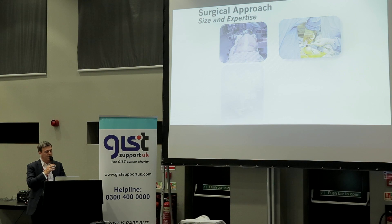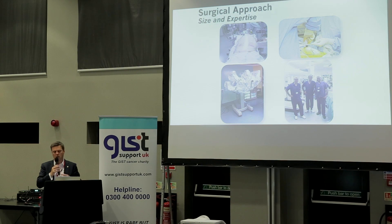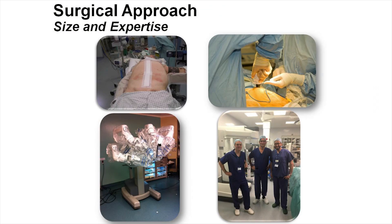There are several ways to take out a GIST. Laparotomy — the old-fashioned cut — is the best way certainly for big tumours. Then you have to decide whether you're going to do a laparoscopic or keyhole approach, or a robotic approach. The robot is in all the media — it's been a great innovation, but really it's just another way of doing a minimally invasive operation, and it might be a way of extending that to more people.